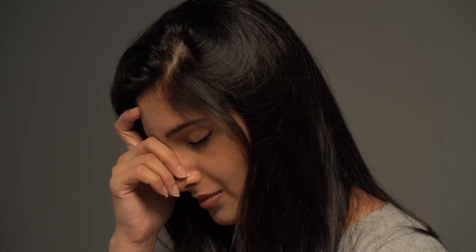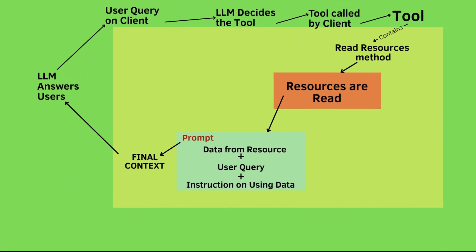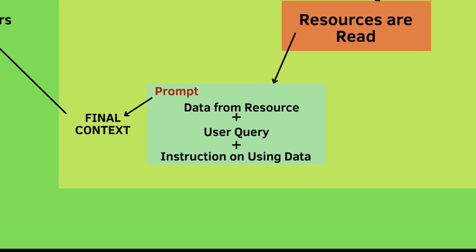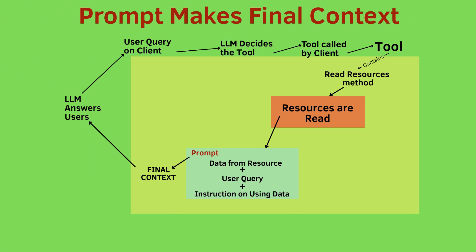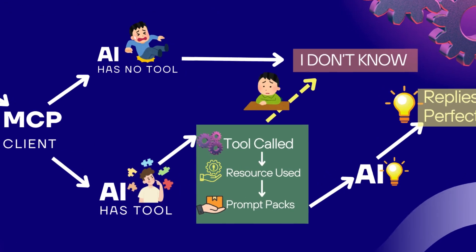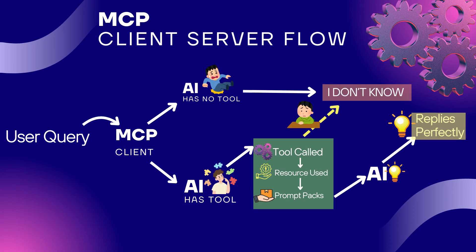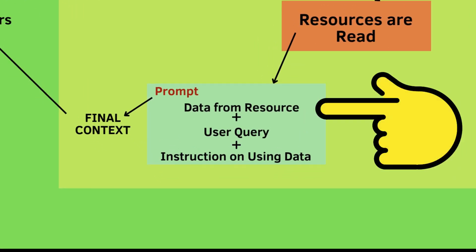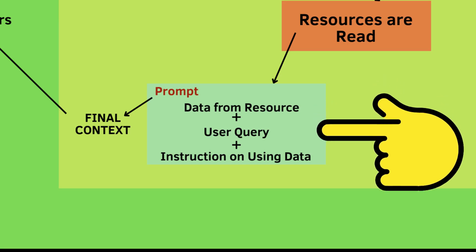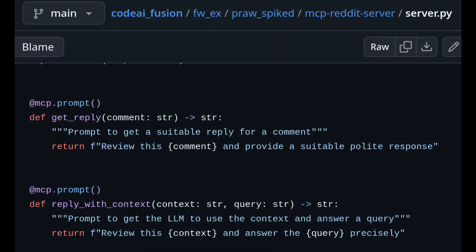The next piece of the puzzle is deceptively simple yet often misunderstood: prompts. In MCP, prompts act as the glue between your context and the user's query, guiding the model to generate accurate, relevant answers. Prompts live either inside the client or within the tools, tailored to manage specific tasks. Data is read from the resources, and the instruction on using that data is provided by the prompts.